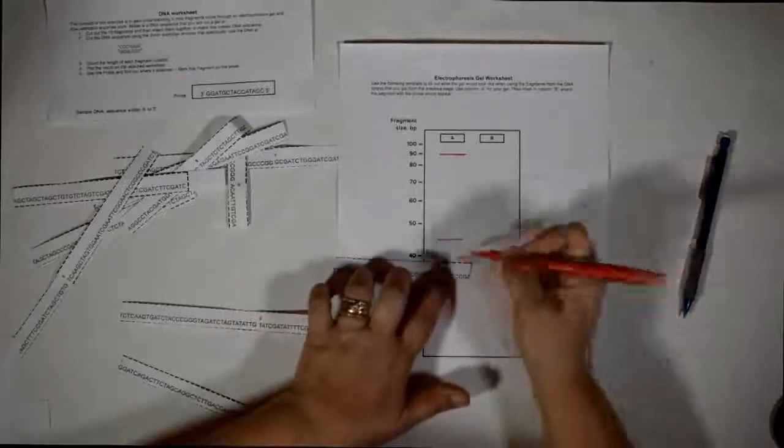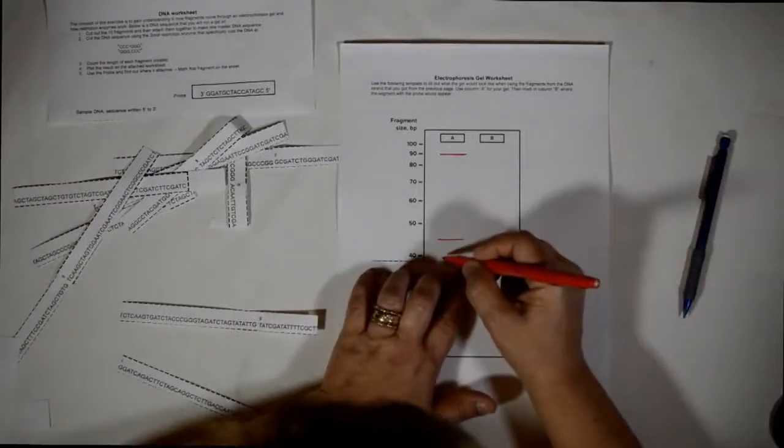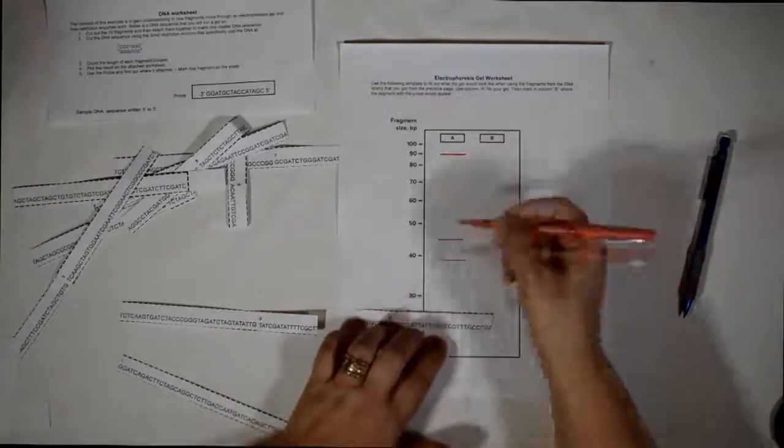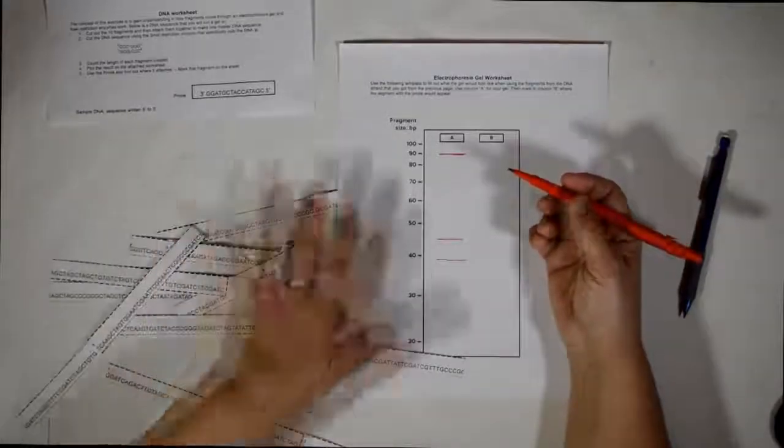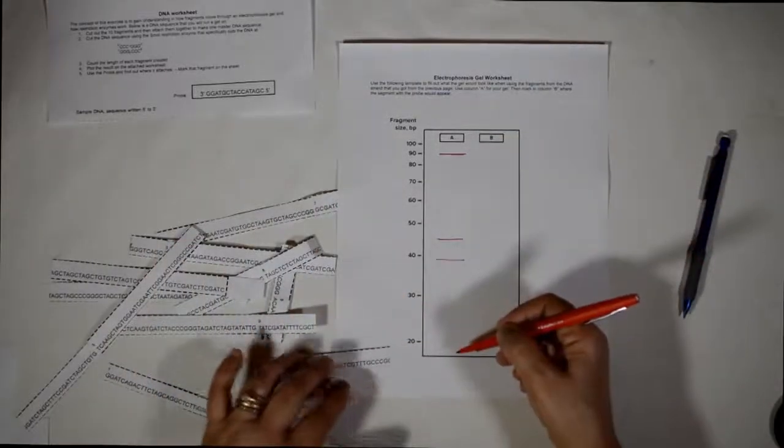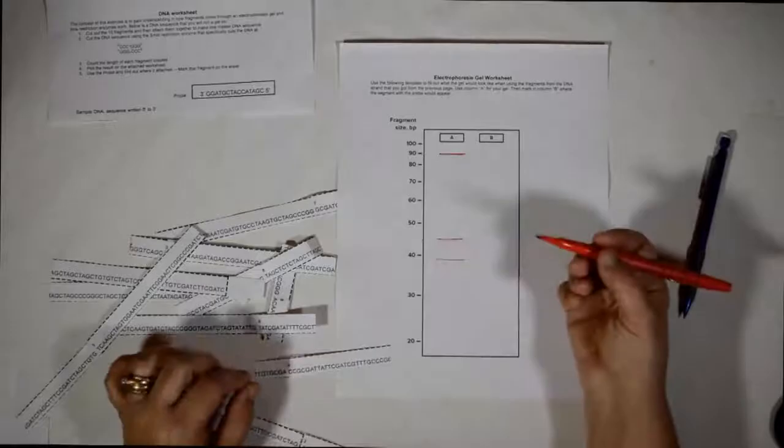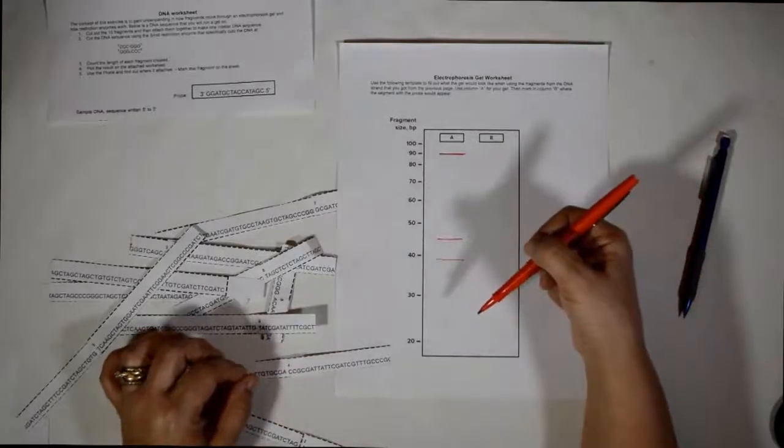So that's how you go and you mark all the fragments. You would have 10 lines all the way here. That would be the representation of how those fragments of DNA will be set on the electrophoresis gel.